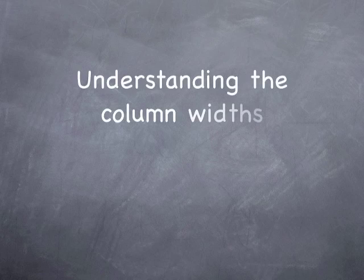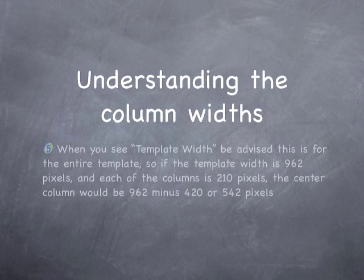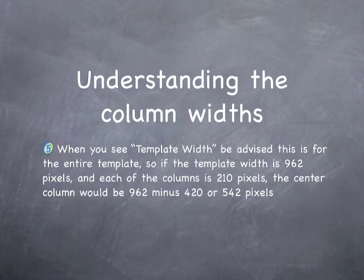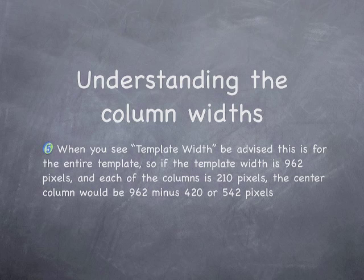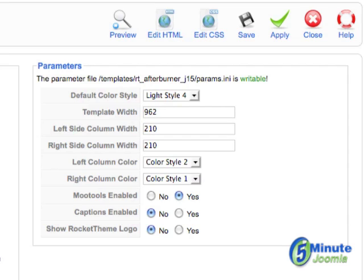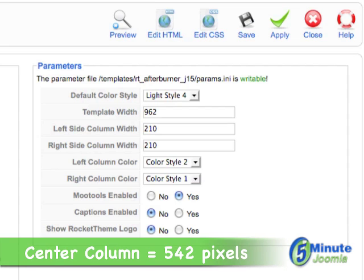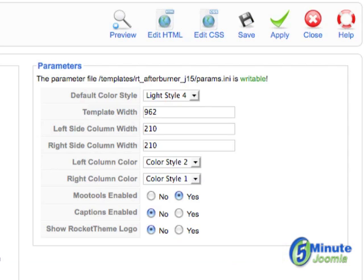Now what you need to know is the total width of the template is 962 pixels. To determine the width of the center column, you would subtract both the left and right side columns from the total template width. That means 962 minus 210, and minus 210 again, which comes out to 542 pixels, which will be the size of the center column width.